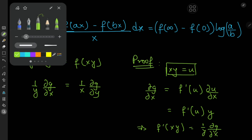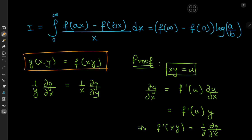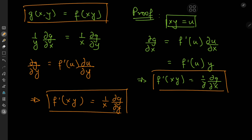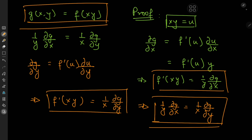Now, differentiating with respect to y, we have the partial derivative of g with respect to y equal to the derivative of f with respect to u times the partial derivative of u with respect to y, which is x. So the derivative of f also equals (1/x) times the partial derivative of g with respect to y. Since both equal the derivative of f, we have (1/y)(∂g/∂x) = (1/x)(∂g/∂y), provided g has this form.